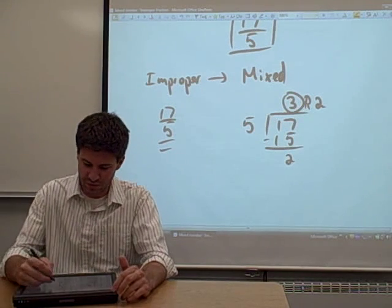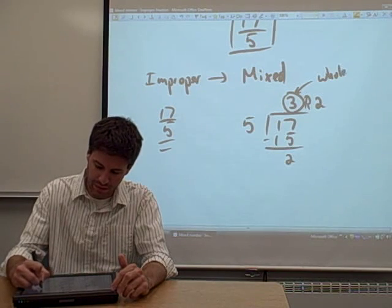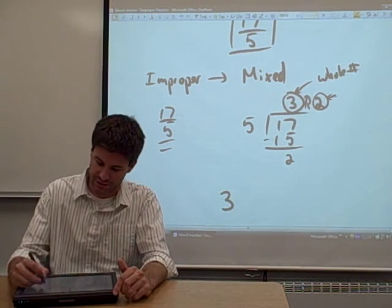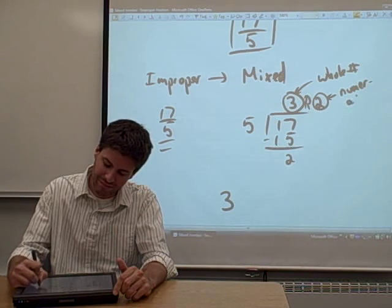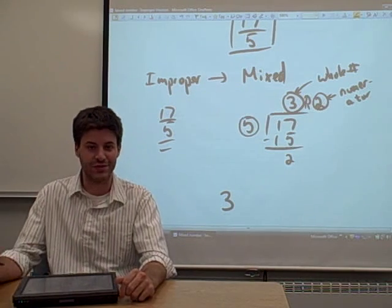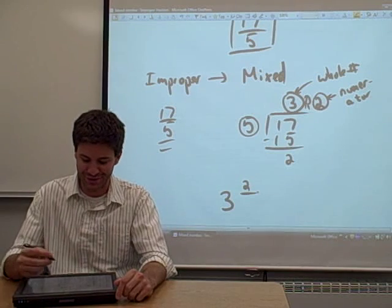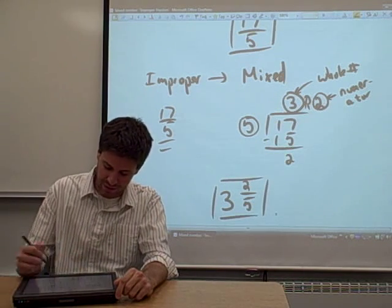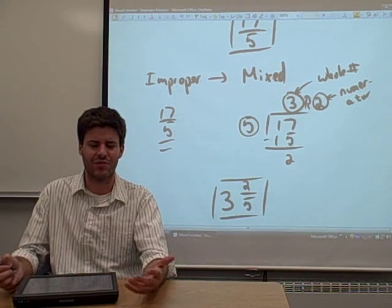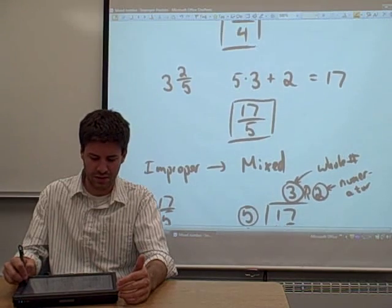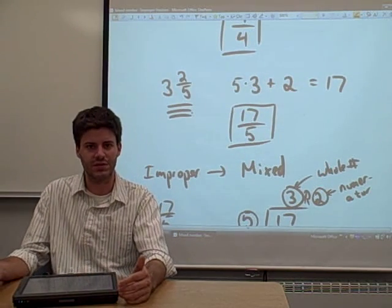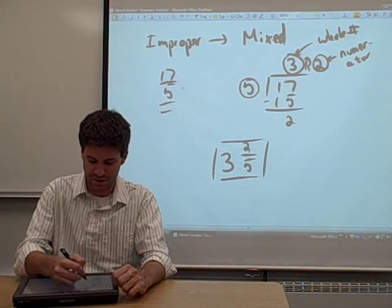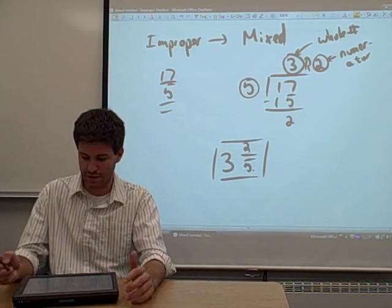That quotient — 3 — becomes your whole number of your mixed number. That remainder becomes the numerator of your mixed number. The 5, which was your old denominator, stays the denominator of your mixed number. So what you have is 3 and 2 fifths. We started with the mixed number 3 and 2 fifths, converted it to 17 fifths, then took 17 fifths and converted it back to 3 and 2 fifths — so it all worked out great. Good work.